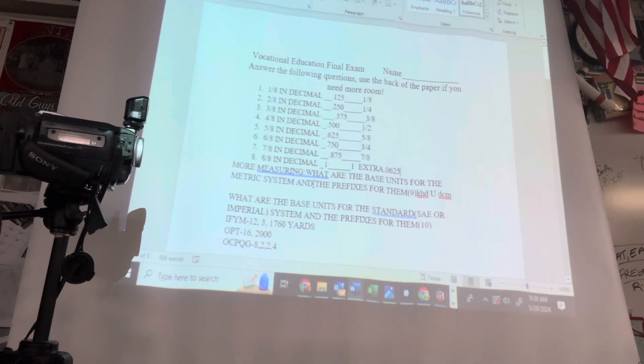Metric system and the prefixes for them. Prefixes for the metric system: KHD, remember King Henry Died Monday Drinking Chocolate Milk, or King Henry Died Unexpectedly Drinking Chocolate Milk. Kilometer, that's a thousand meters. Hecta, think like a hundred, that's a hundred meters. Deca, that's 10 meters, think like a decade. And then U is the unit, it can be meter, liter, or gram. Meter for distance, liter for volume like a two-liter bottle of pop. Gram for weight. Then the other three are decimeters, centimeters, millimeters.